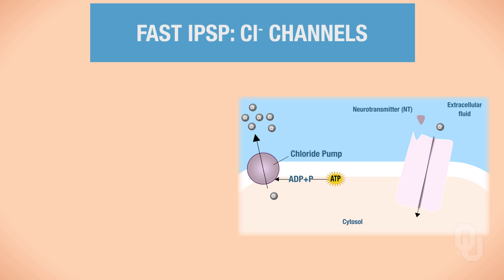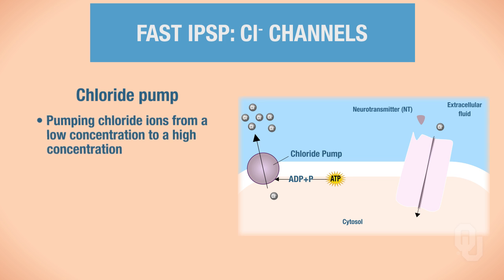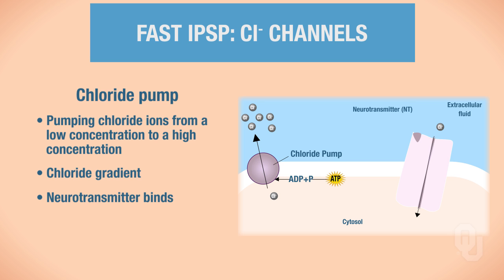We can also generate inhibitory postsynaptic potentials using chloride channels, and there are three different ways this can occur on different neurons. In the first mechanism, the neuron has a chloride pump. This pump moves chloride ions from low to high concentration, pumping them out of the postsynaptic cell into the extracellular fluid — creating a chloride gradient. A neurotransmitter then binds to an ionotropic chloride channel, and since this is a fast response, the channel must be ionotropic.